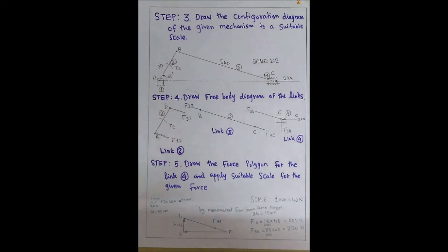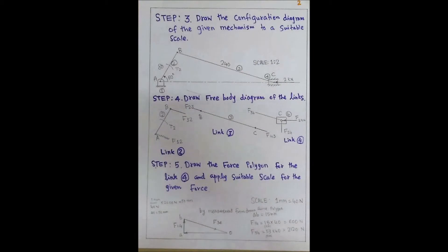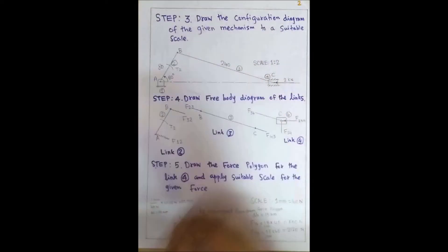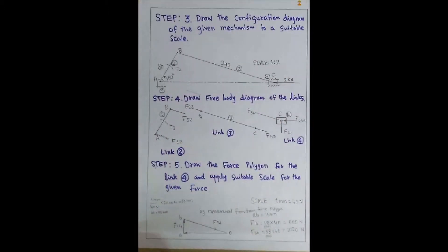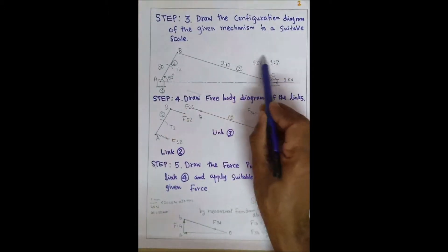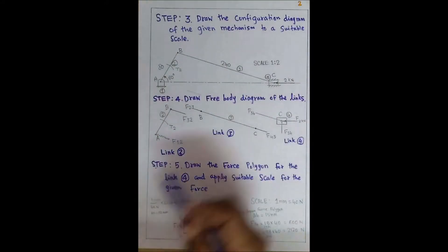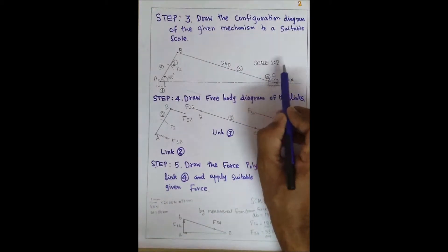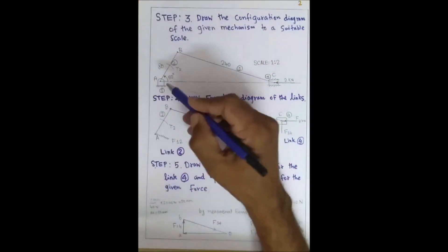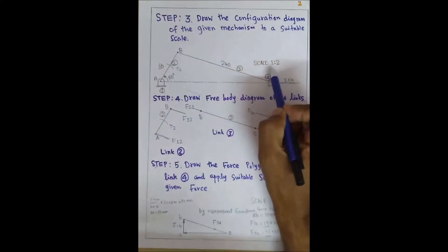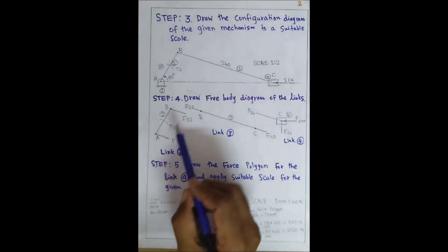Step 3 — draw the configuration diagram of the given mechanism to a suitable scale. I am taking a scale of 1:2, because I am drawing this diagram. A scale of 1:2 means if the actual dimension is 100 mm, we draw it as 50 mm. However, on the link, you write the original dimensions.